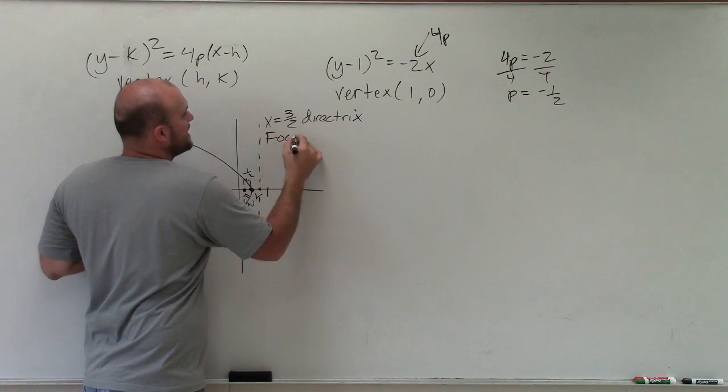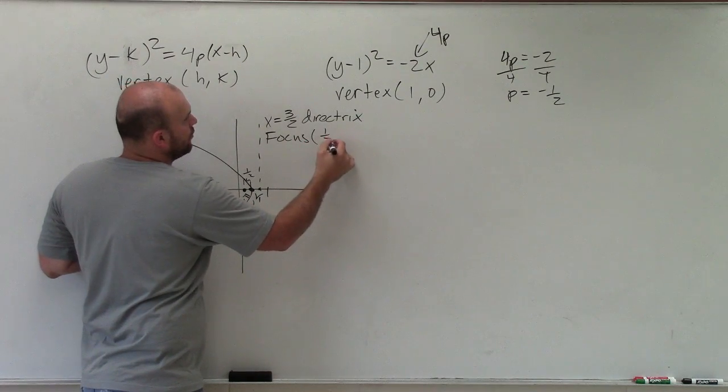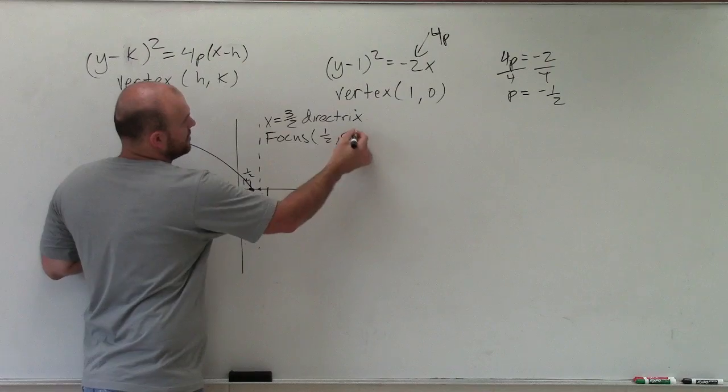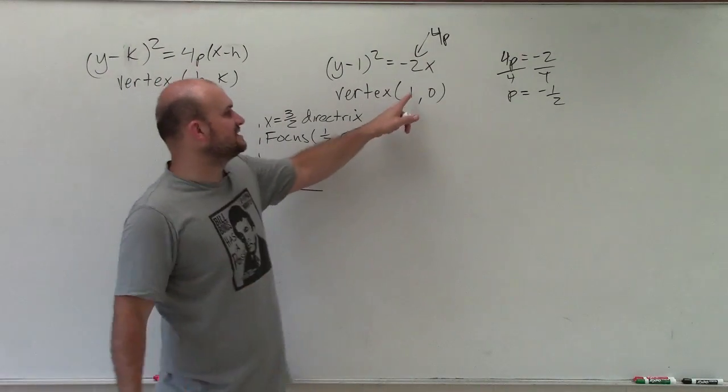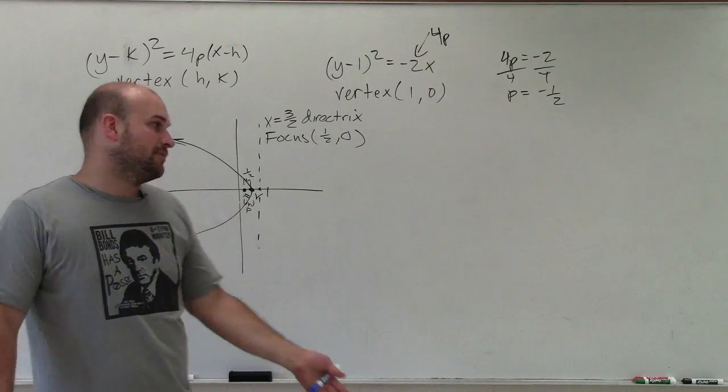And the focus is a point. So when writing the focus, that's going to be negative 1 half comma 0, because it's only a distance of negative 1 half from the vertex. That's where that point is going to lie.